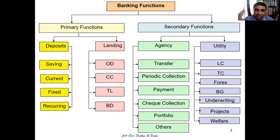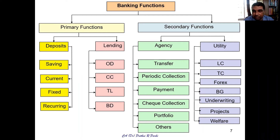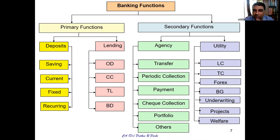In addition to that, there are some functions we call utility functions. The utility functions include: LC, TC, forex, bank guarantee, underwriting, projects, and welfare. These are again inclusive in nature.